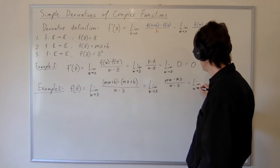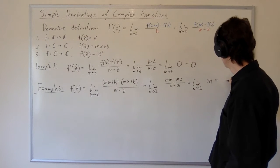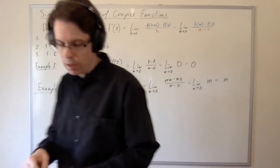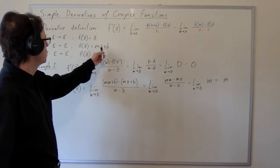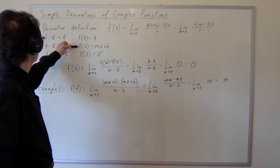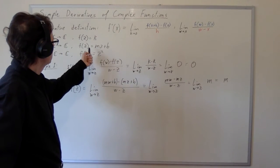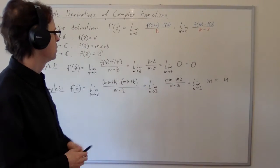Which is now the limit as w approaches z of the constant function m, which of course is m. This is a reassurance that our definition still works. The derivative of a linear function mz plus b is m. Notice that the second example actually includes the first example because we can take m to be zero, and then this linear function is the constant function b which has derivative zero.